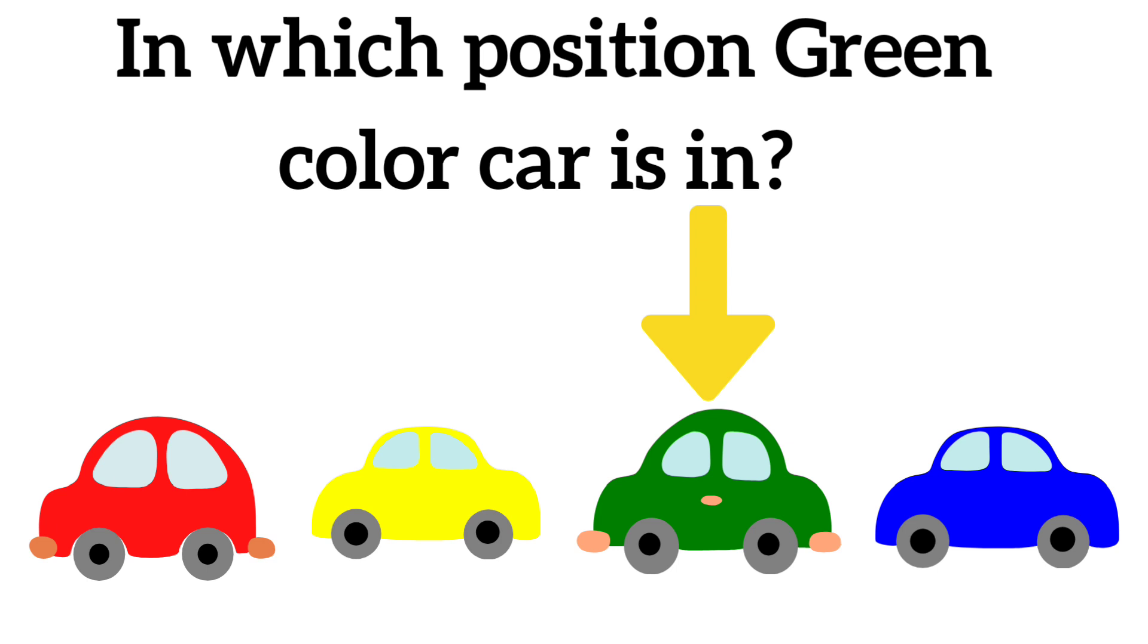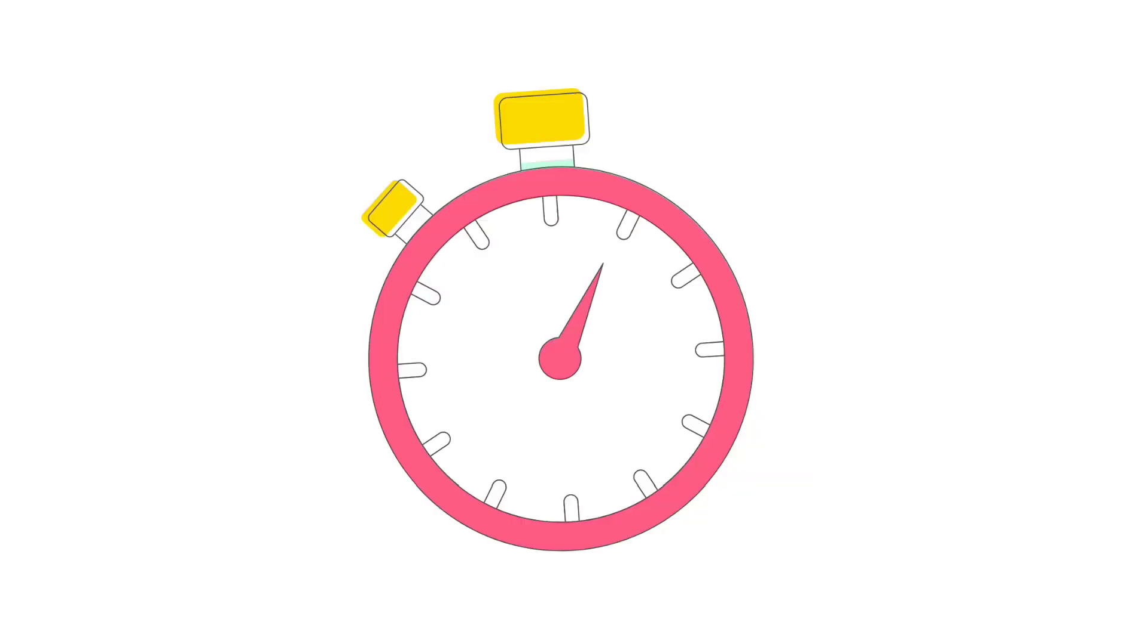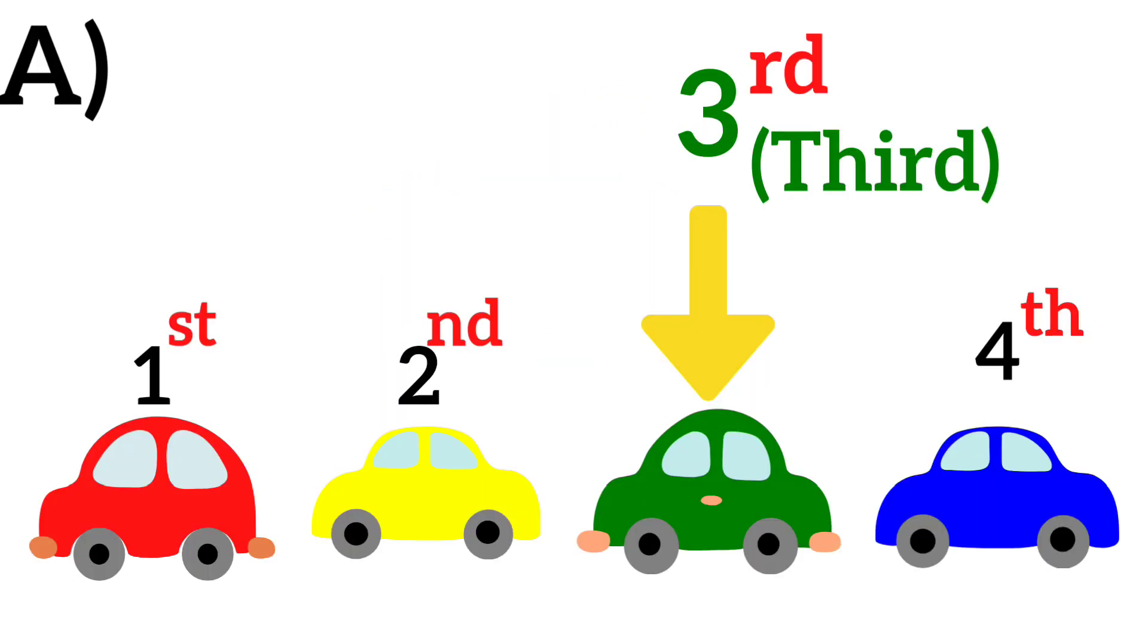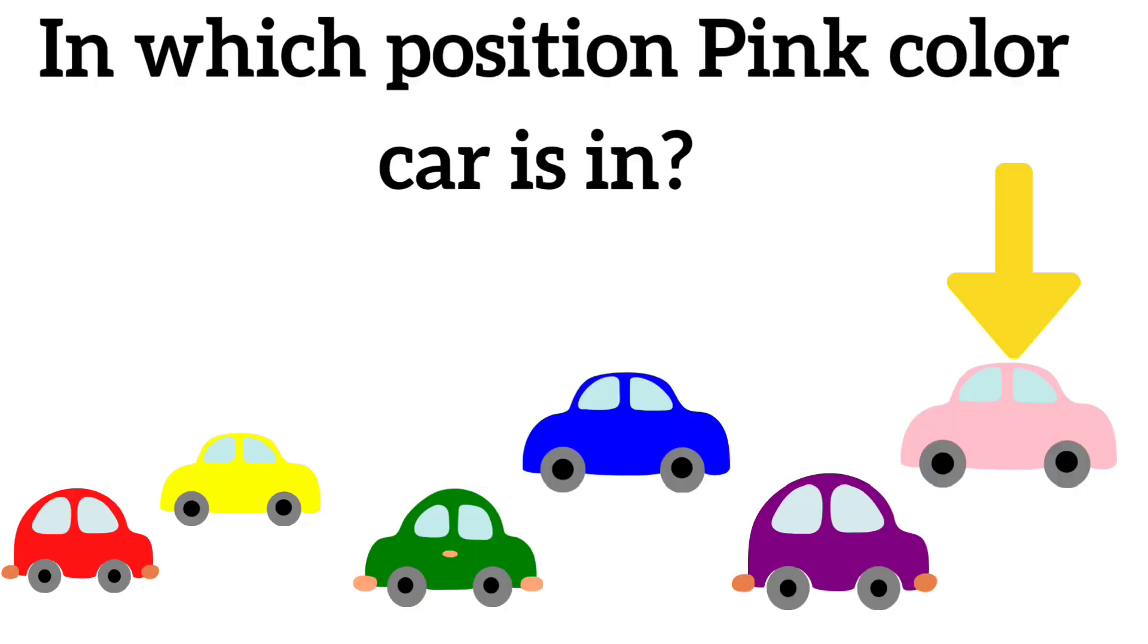your first question: In which position is the green color car placed? Think time is on. Time up. Answer is third position. Green color car is placed in 3rd position.